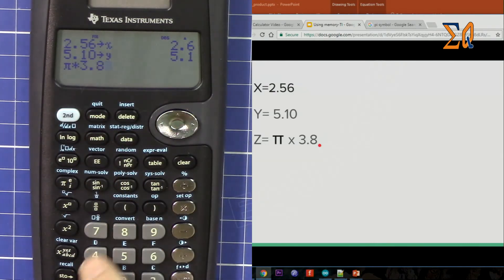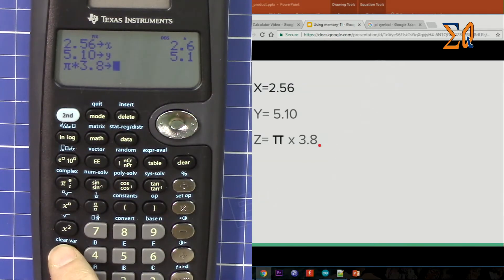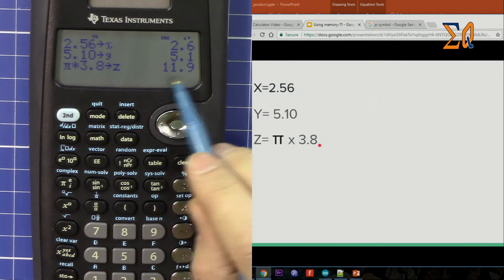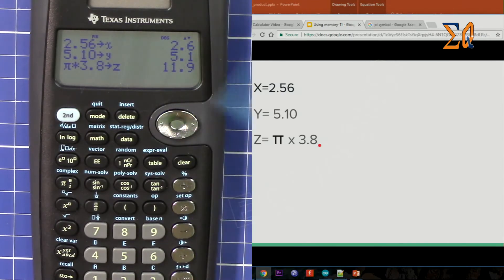So store, and then press this until you see Z. So Z, so Z is there. So the value have been evaluated and enter. So this is 11.9.